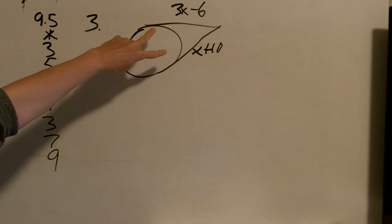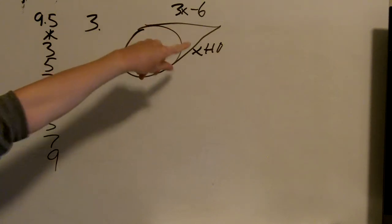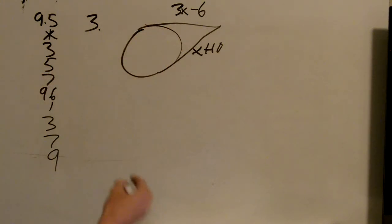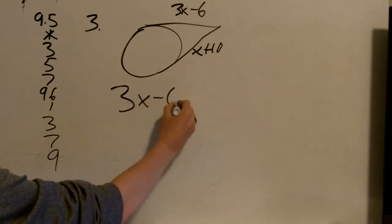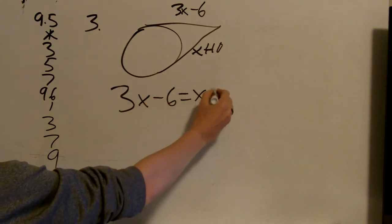Now since these are both tangent, and to the same circle, and hit at the same point, that means they're equal to each other. So all I'm going to do is say 3x minus 6 equals x plus 10.